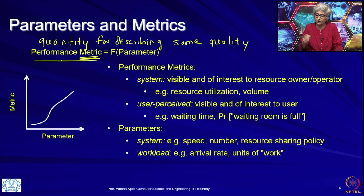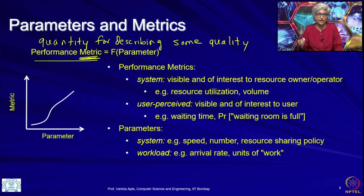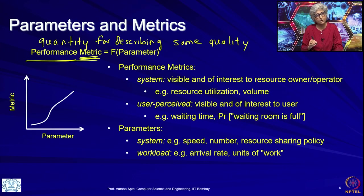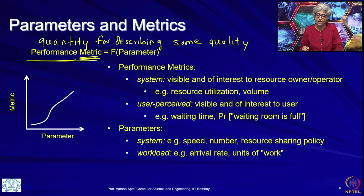Metrics can be for anything. A metric for describing an efficient car, recall from the previous lecture, could be how many liters of petrol it consumes or how many kilometers it gives per liter. The metrics we will talk about are for computer and network performance, so that is why we call them performance metrics. It can be a reliability metric also — how many times a car broke down in the last 5 years is a reliability metric — but we will only talk about performance metrics in this class.